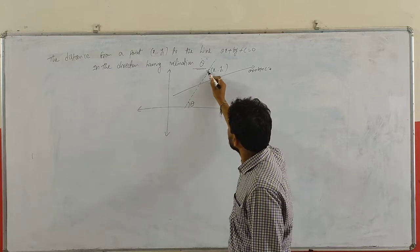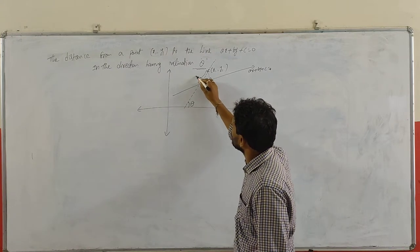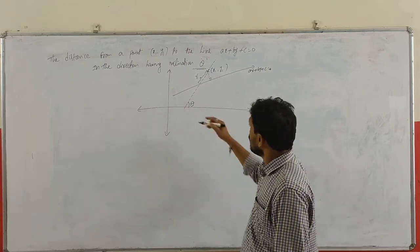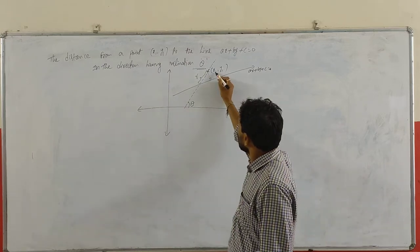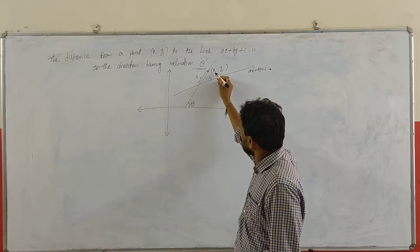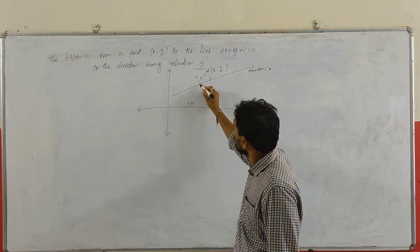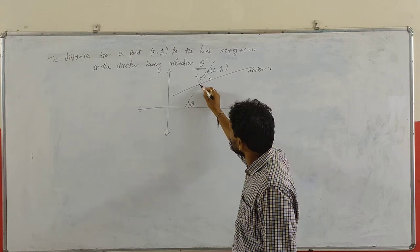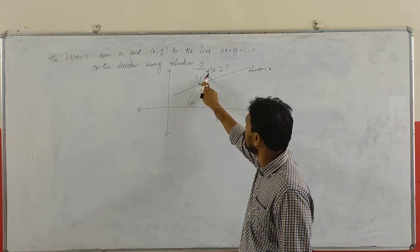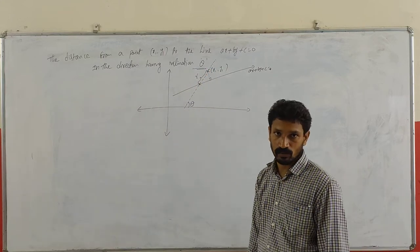He is asking the distance between these two points. Take the point P(x1, y1) lying on a line with inclination theta. Let the intersection point of that line and the given line Ax + By + C = 0 be Q.